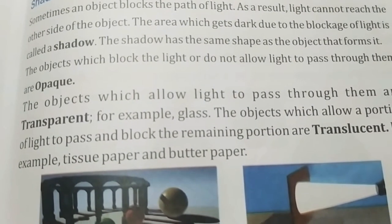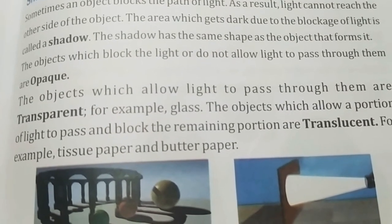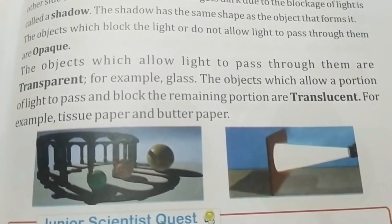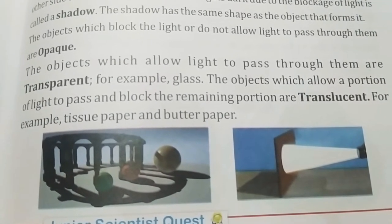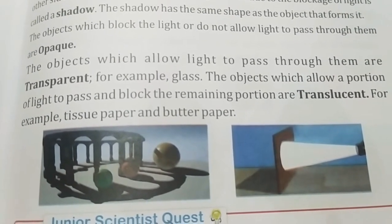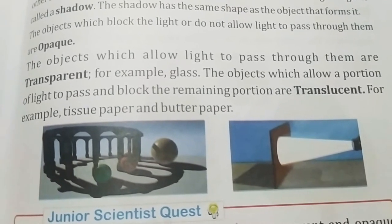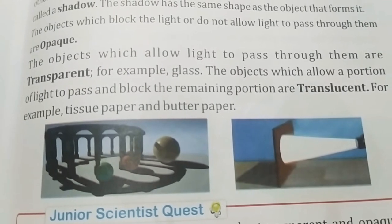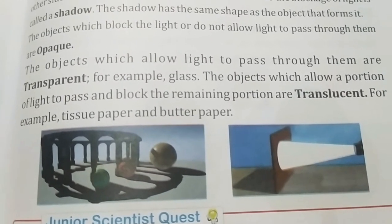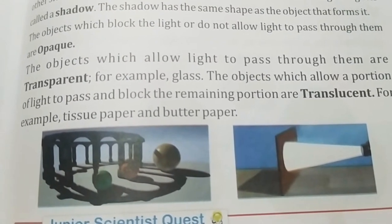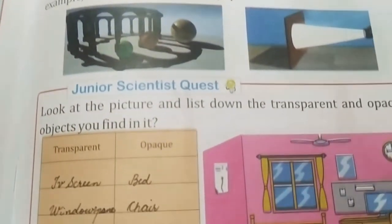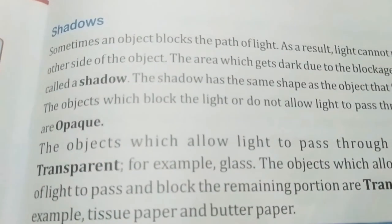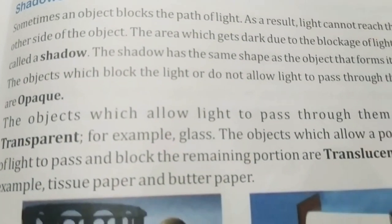The second type of objects are those that allow light to pass through them — they are called transparent. Transparent sheets, glass, etc. are transparent objects. The objects which allow only a portion of light to pass through them are called translucent. For example, tissue paper, butter paper, frosted glass, or a fingernail is translucent. So we have studied opaque, transparent, and translucent.